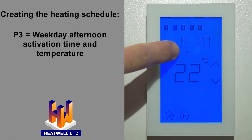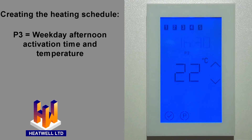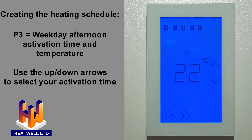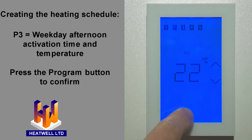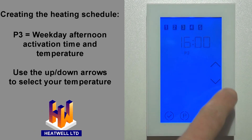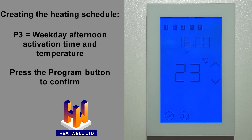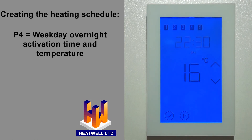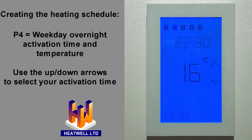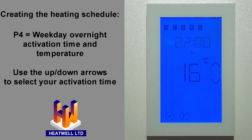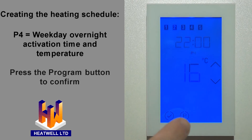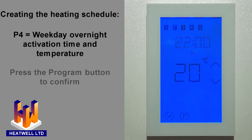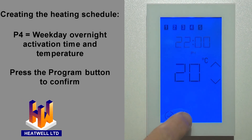P3 will now be displayed. This is your switch on time and temperature for when you arrive home in the evening. Just like P1 and P2, for P3 we'll choose our preferred activation time — in this case, 4 p.m. Then press the program button. Now we'll select our evening floor temperature, being 23 degrees. Press the program button to lock it in, and P4 will be displayed. P4 is your weekday overnight floor temperature and time. Use the up or down arrows to choose your ideal time for your heated floors to cool down — in this case, 10 p.m. Then press the program button, and select your overnight floor temperature for during the week. We'll select 20 degrees. To finish these Monday to Friday temperature settings, press the program button once more.